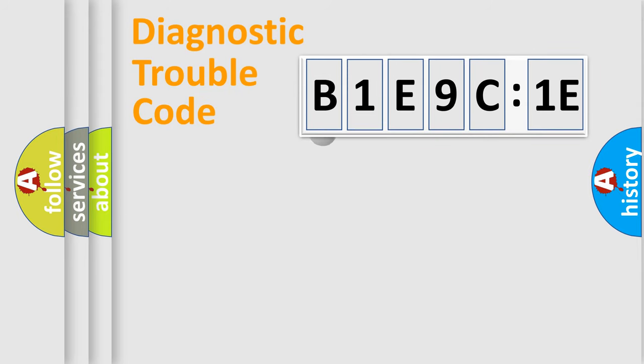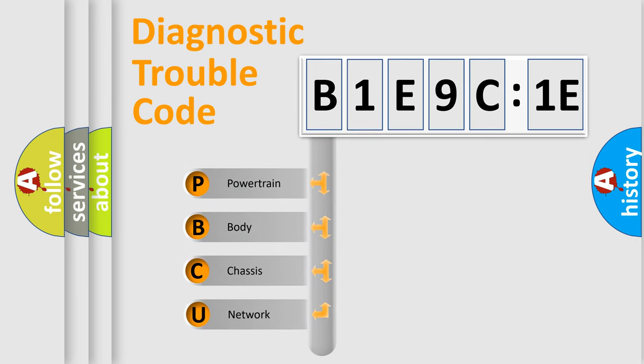First, let's look at the history of diagnostic fault code composition according to the OBD2 protocol, which is unified for all automakers since 2000. We divide the electric system of automobile into four basic units.